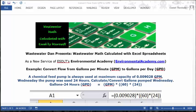Today's example: convert flow from gallons per minute (GPM) to gallons per day (GPD). Today's problem reads: a chemical feed pump is always used at maximum capacity of 0.009028 GPM. Wednesday the pump was used 24 hours. Calculate/convert gallons pumped Wednesday.